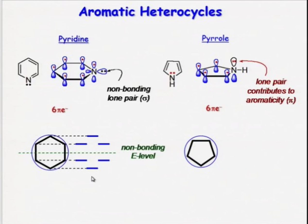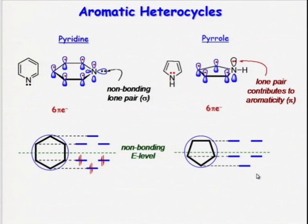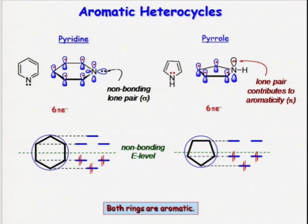Therefore, we can conclude that pyridine is indeed an aromatic system. If we do the same for pyrrole and fill up our molecular orbitals from the bottom up with 6 pi electrons, we again see that all 6 pi electrons contribute to the bonding molecular orbitals and none contribute to non-bonding and antibonding. Therefore, we can conclude that both rings are indeed aromatic.